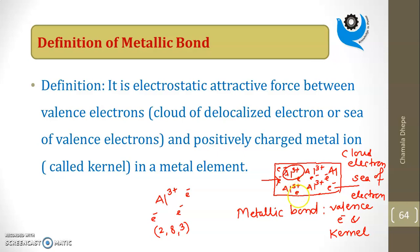These delocalized electrons play a very important role in the properties of the metallic bond — including conduction of electricity, heat conduction, malleability, luster, and ductility — all because of those valence electrons, or the cloud of delocalized electrons. So, metallic bond is nothing but the force of attraction between this positively charged kernel and the valence electrons.